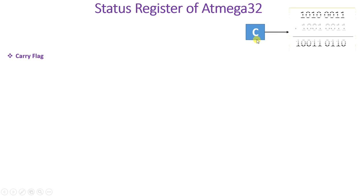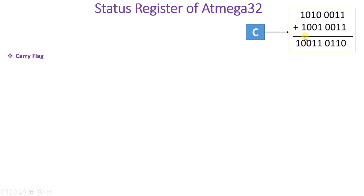The status register is 8-bit. The first bit is the carry flag bit, and it indicates carry generated in an operation while we execute an instruction in ATmega32. For example, in an addition of two 8-bit data, you can observe an extra bit generated beyond B7 — that indicates carry. If carry is generated beyond the B7 bit, this carry flag will get set to 1.